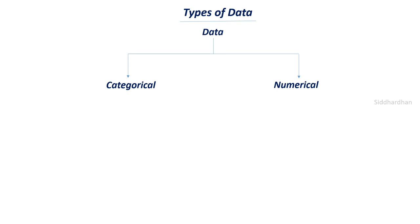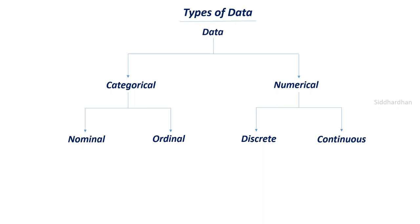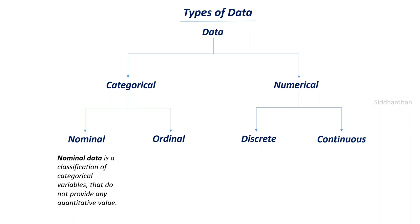Categorical data can be classified into nominal data and ordinal data, and numerical data can be classified into discrete data and continuous data. These are the four classifications of data. Nominal data is a classification of categorical variables that do not provide any quantitative value.